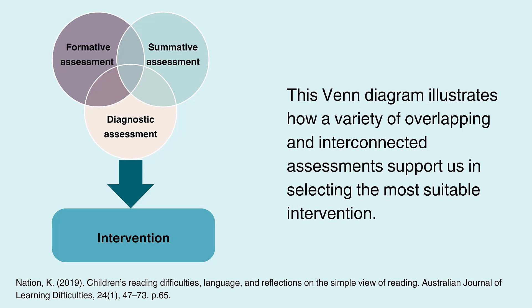This Venn diagram illustrates how a variety of overlapping and interconnected assessments support us in selecting the most suitable intervention. When more than one of these assessments consistently tells us that a child needs support, it is then time to consider an appropriate intervention.